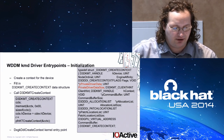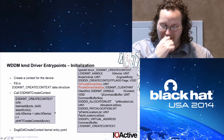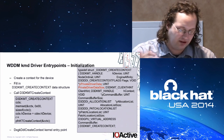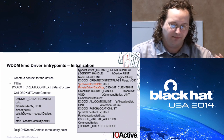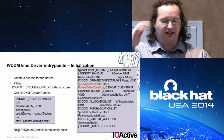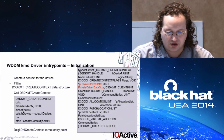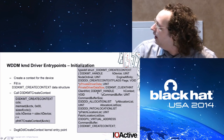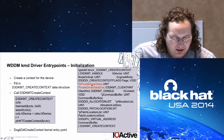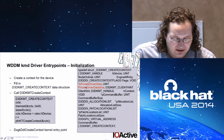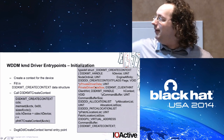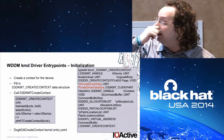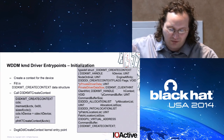When you call D3DKMTCreateContext, the structure you pass contains private_driver_data_size and private_driver_data. If the driver has a parser for that data, that's attack surface — that's what you care about. If you're writing a fuzzer, those are the fields you want to fuzz. When context creation succeeds, the driver does things on your behalf: it creates a command buffer and maps it into your address space. That buffer is what gets used when you send commands back and forth between user land and kernel.